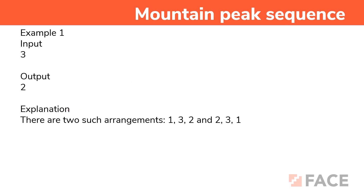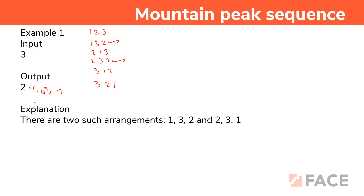Let us look at the sample input and output. For input 3: from the values 1, 3, 2 and 2, 3, 1 — only these two arrangements look like a mountain peak sequence. So 2 mod 10 power 9 plus 7 gives the answer 2.